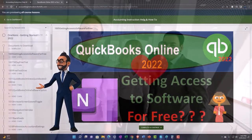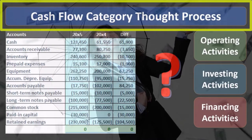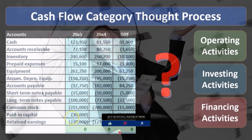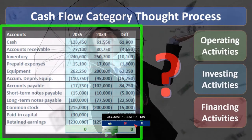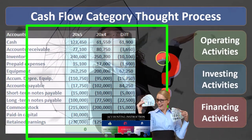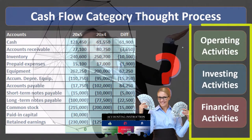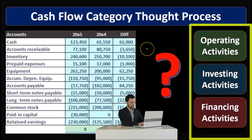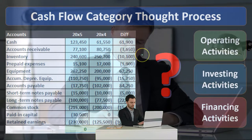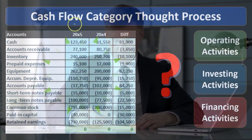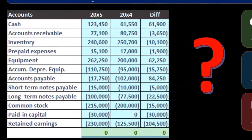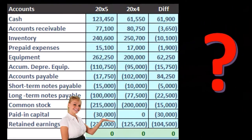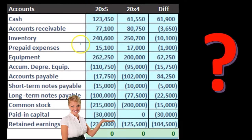Typically we will have a worksheet that we will use in order to generate the statement of cash flows. That statement of cash flows has three major components: operating activities, investing activities, and financing activities. Our goal is to fill out these three components. The worksheet is basically a comparative balance sheet reformatted into a trial balance type format — a debit and credit type format.